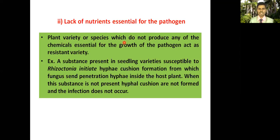Plant varieties or species that do not produce any chemical essential for the growth of the pathogen act as resistant varieties. For example, a substance present in susceptible seedling varieties initiates hyphal cushion formation in Rhizoctonia, from which the fungus sends penetration hyphae into the host plant. When this substance is not present, hyphal cushions are not found and infection does not occur.